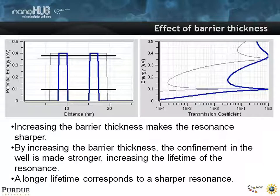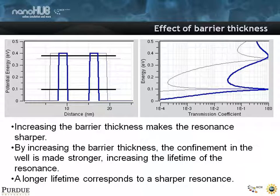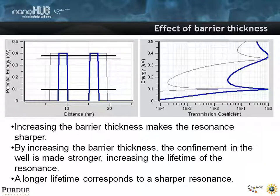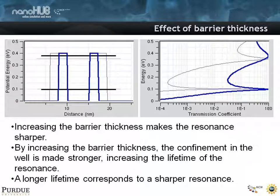Now let's take the same barrier height but make it thicker — same structure, it just makes the barriers thicker. What you see is that indeed the resonance almost does not move; a little bit the excited state moves, but the ground state doesn't move — but it gets much sharper. This goes along with confining the electrons for longer times, so the cavity Q or the resonance linewidth gets narrower, the cavity Q gets larger, the resonance linewidth gets smaller, and the resonance time gets longer as you make the barriers thicker.